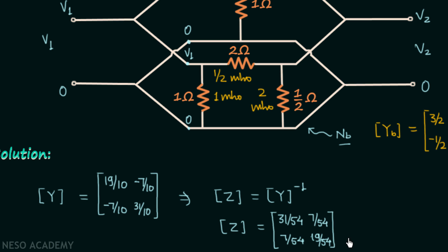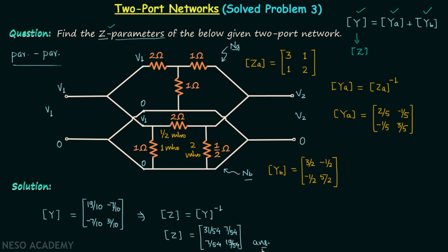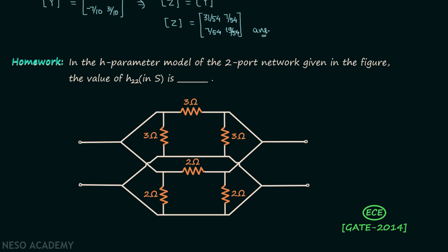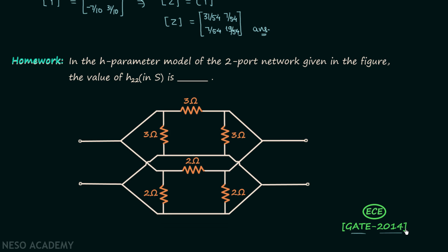This is the final answer. We will now move on to the homework problem, taken from the GATE 2014 ECE paper, where you are required to find parameter H22 in Siemens. Try to solve the question and post your answer in the comment section.